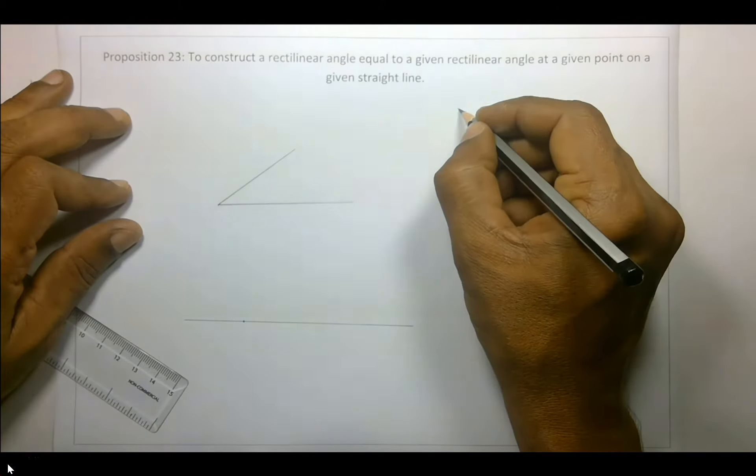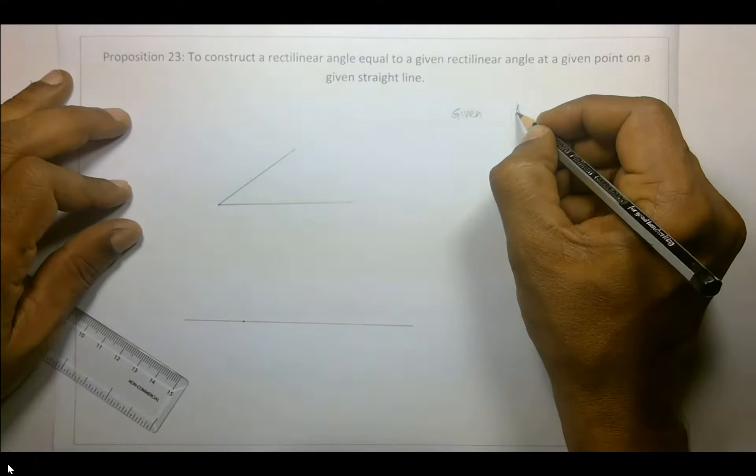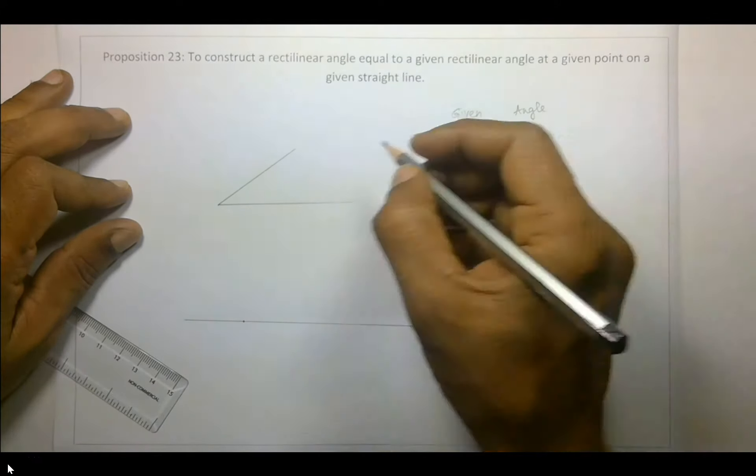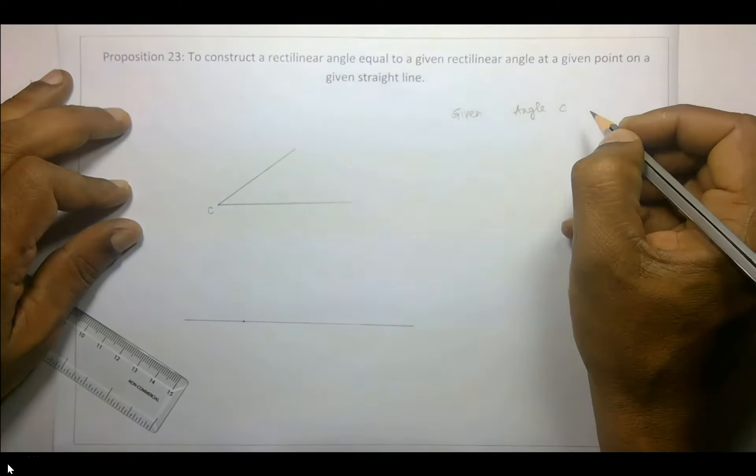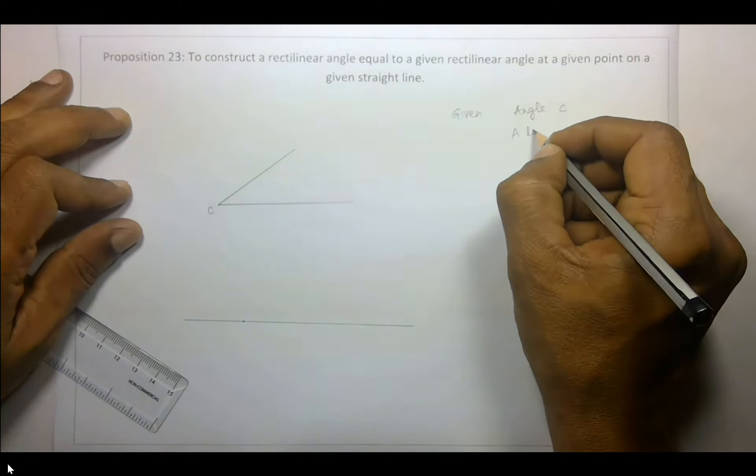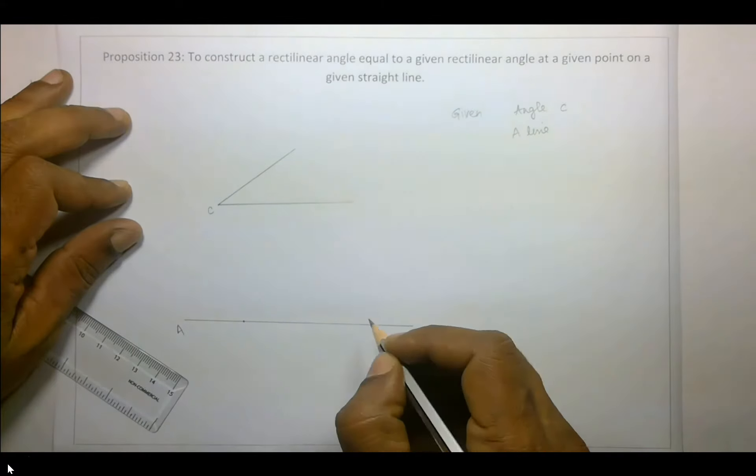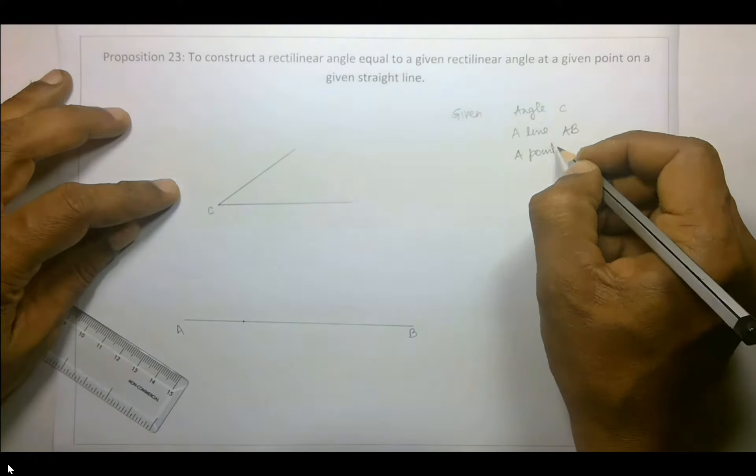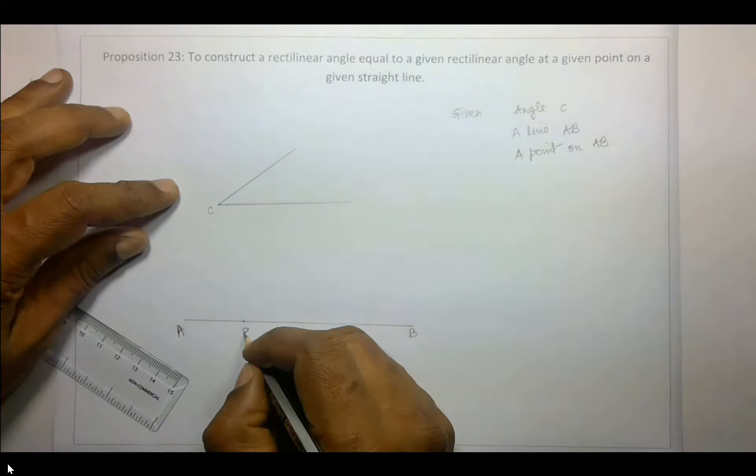So what is given? Given is an angle, let's say C. A line, let's say A, B. A point on A, B, let's say this is P.